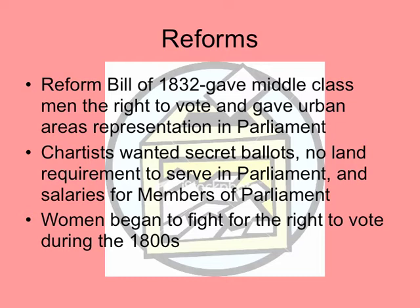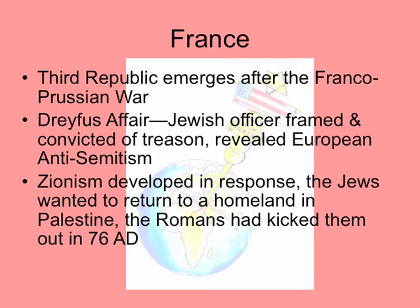Women begin to fight for the right to vote during the 1800s, and there are a lot of connections between women in the British Empire and women in America all fighting for the right to vote. France: the Third Republic emerges after the Franco-Prussian War, and one of the big things in France is the Dreyfus Affair. A Jewish officer is framed and convicted of treason, and when it comes out that he was framed simply because he was Jewish, that reveals how anti-Semitic Europe has become. Anti-Semitism means discrimination and hatred of Jews. In response, you get Zionism — the Jews decide they want a return to their homeland of Palestine. The Romans had kicked them out in 76 AD, and now, 1800 years later, they want to go back. That's going to be a problem, and just a little clue here — it's still a problem today.